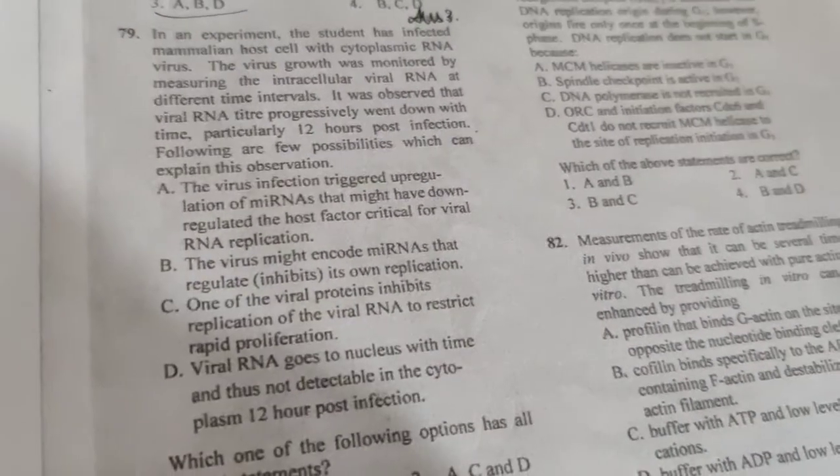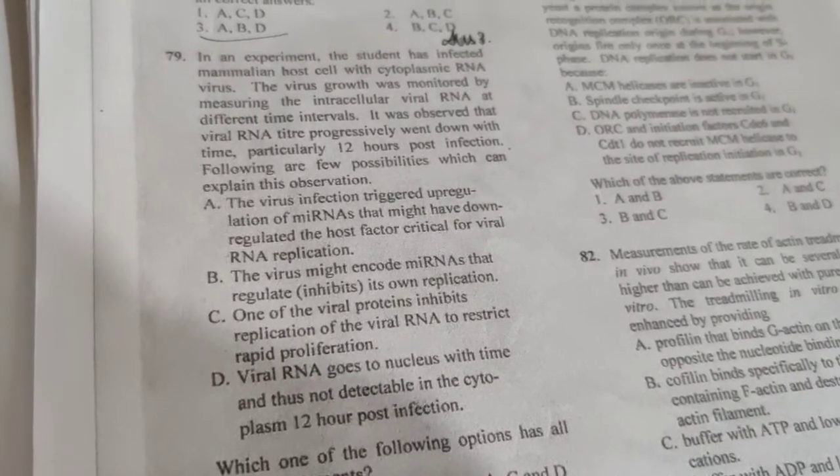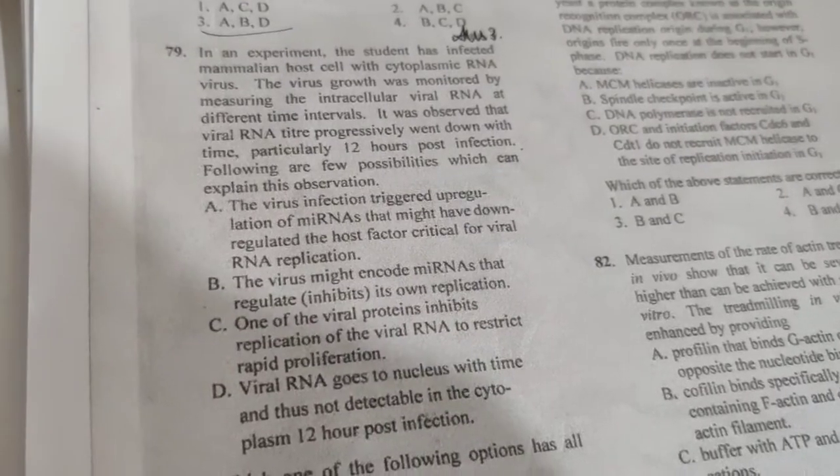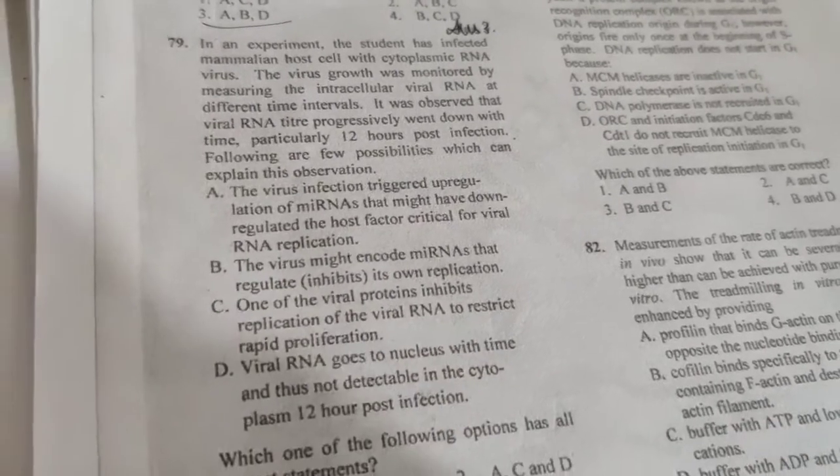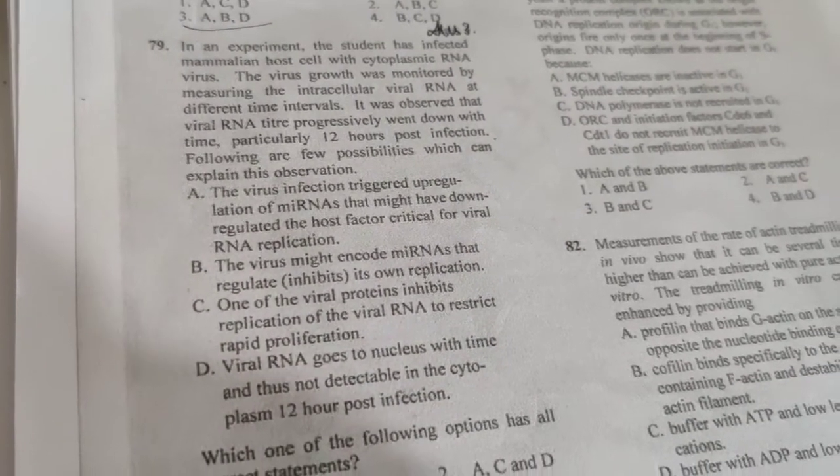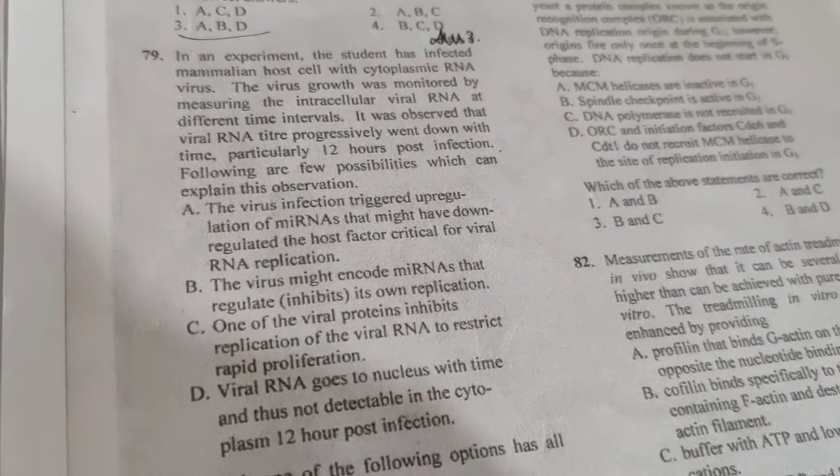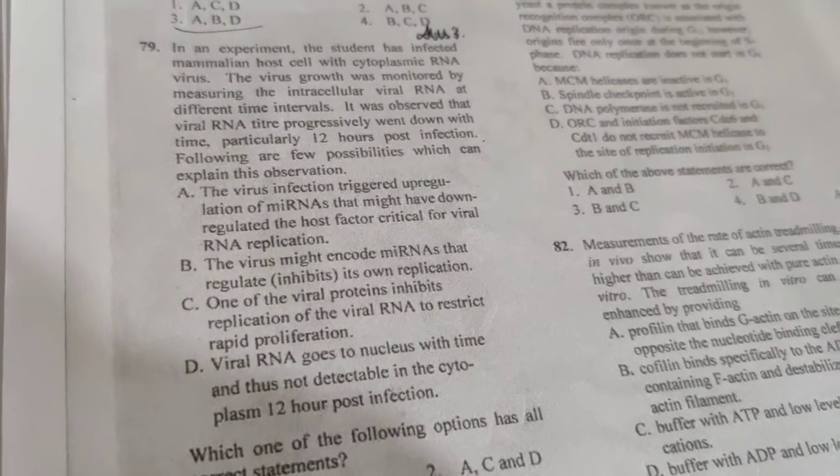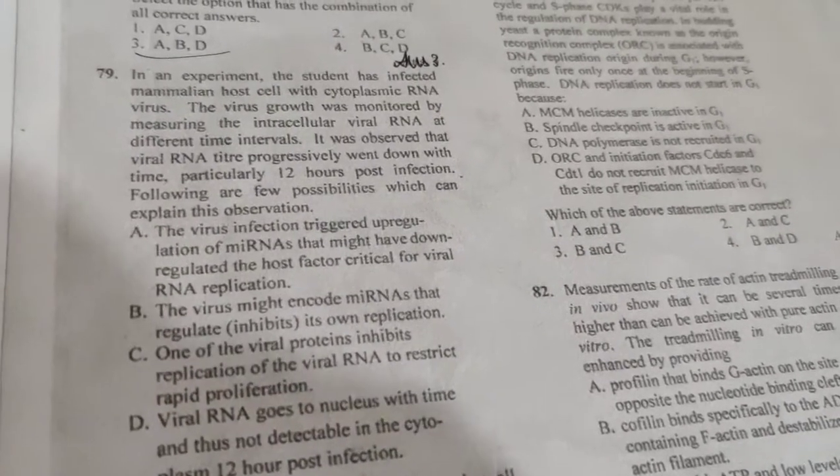So, moving on to next question, 79. And if you have any doubts about previous questions or topics, please comment. In an experiment, the student has infected mammalian host cells with a cytoplasmic RNA virus. The virus growth was monitored by measuring the intracellular viral RNA at different time intervals. It was observed that viral RNA titer progressively went down with time, particularly 12 hours post-infection. Following are a few possibilities which can explain the observations.